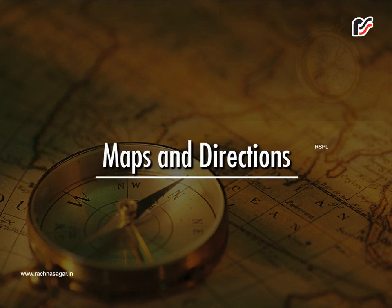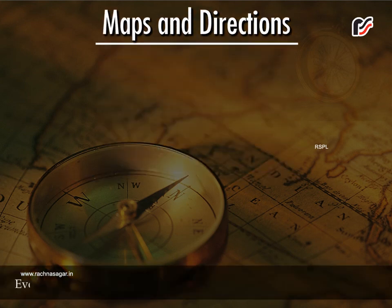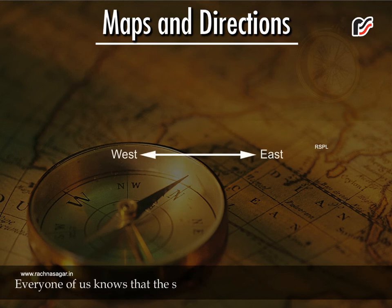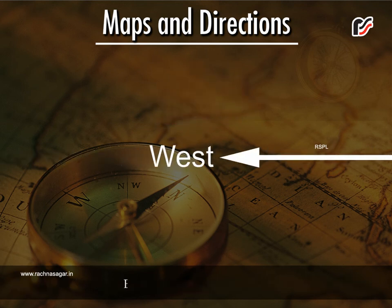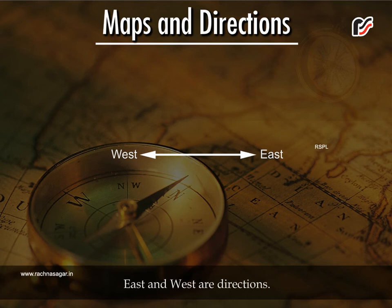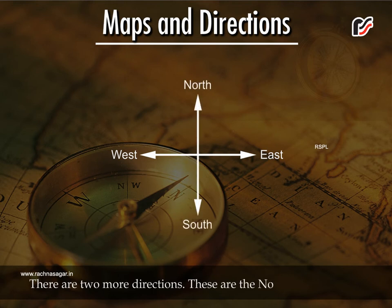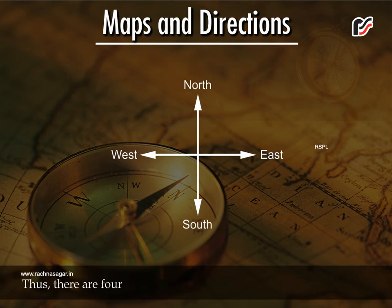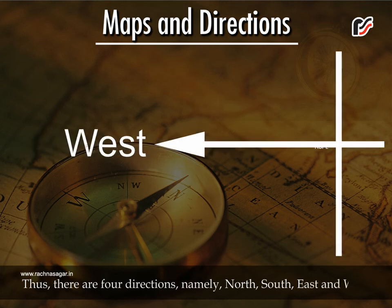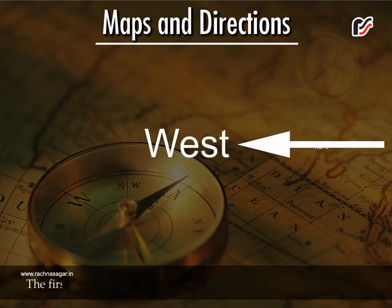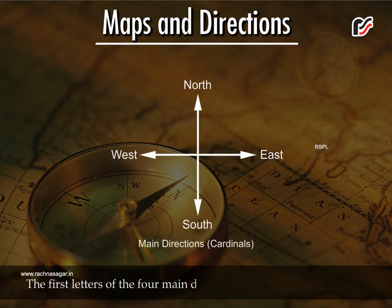Maps and Directions. Every one of us knows that the sun rises in the east and sets in the west. East and west are directions. There are two more directions — the north and the south. Thus, there are four directions namely north, south, east and west. The first letters of the four main directions make the word NEWS.